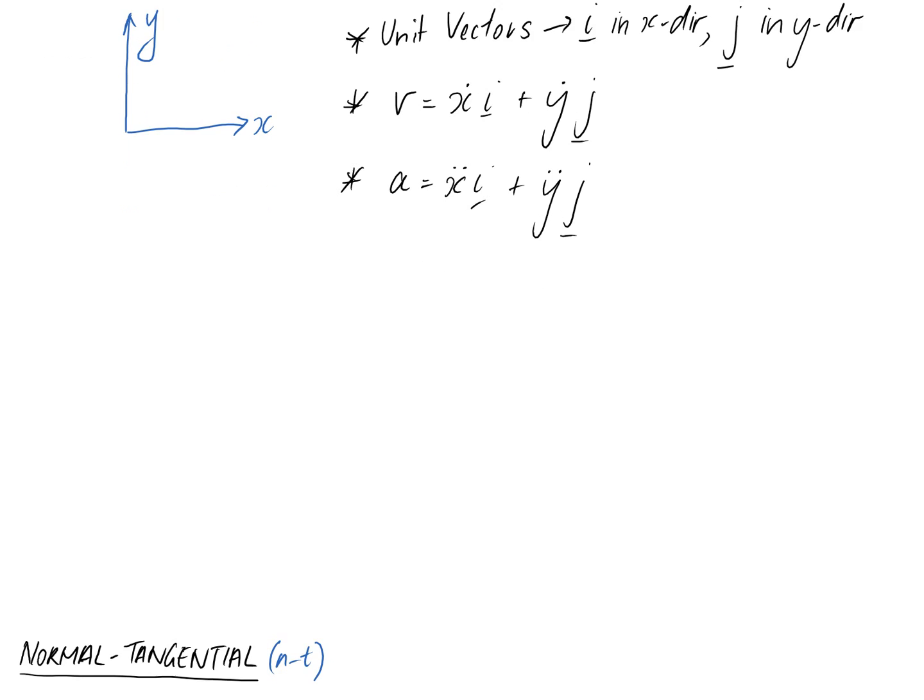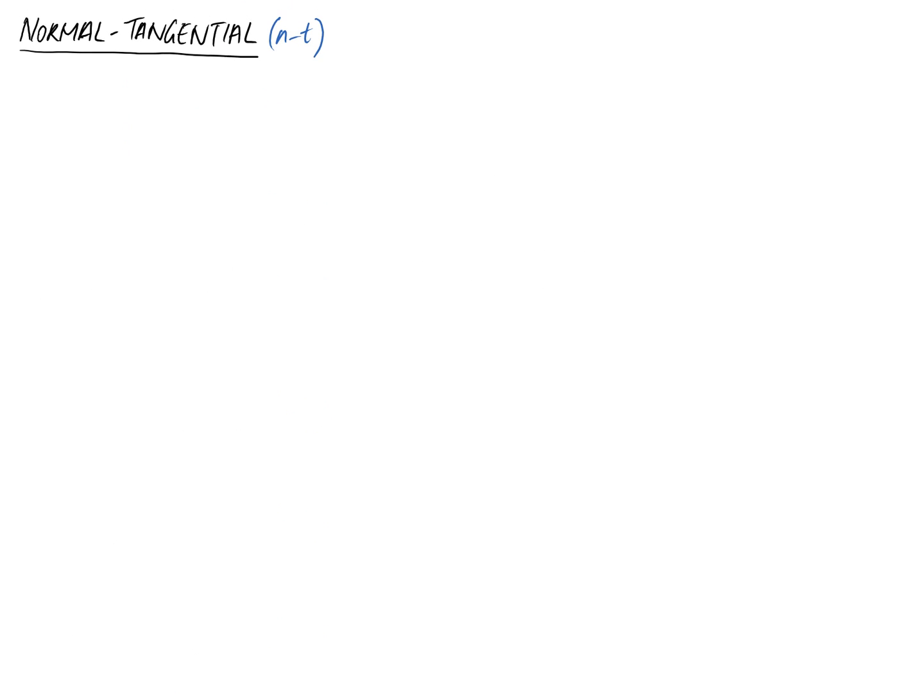We'll move on to the normal tangential coordinate system which is probably unfamiliar. This one is useful when you have something moving on a circular path. Anytime you see circular motion questions or something going around a bend, consider the normal tangential coordinate system.